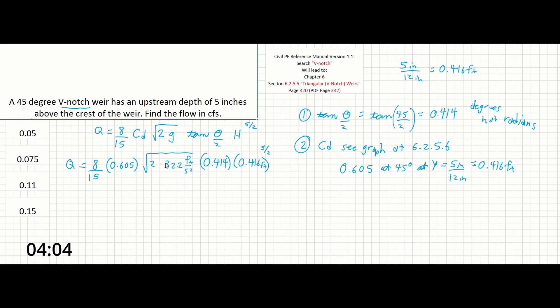And if we solve this out we can see that Q equals just about 0.12 cubic feet per second and our closest value here is going to be 0.11. If you don't get the exact same answer that's fine as long as you're close.